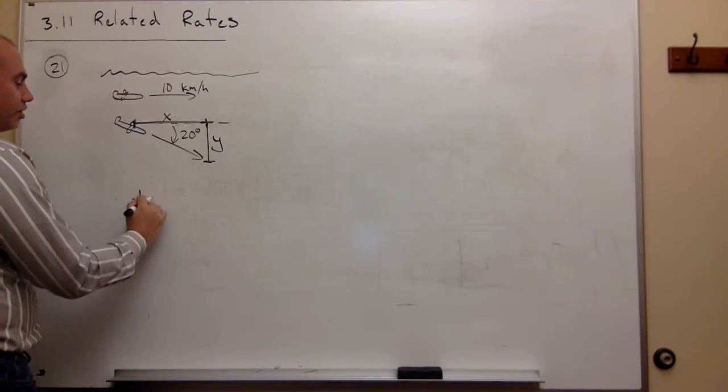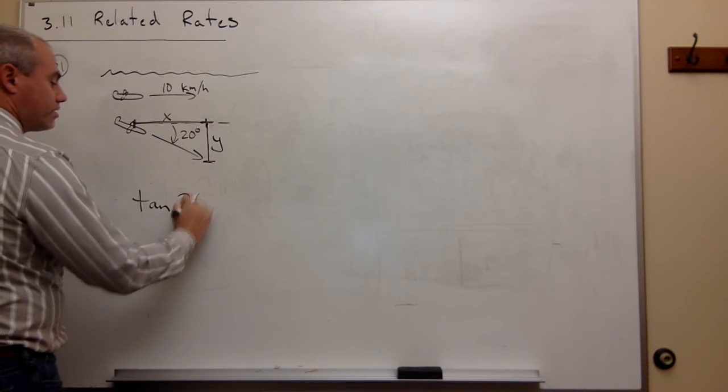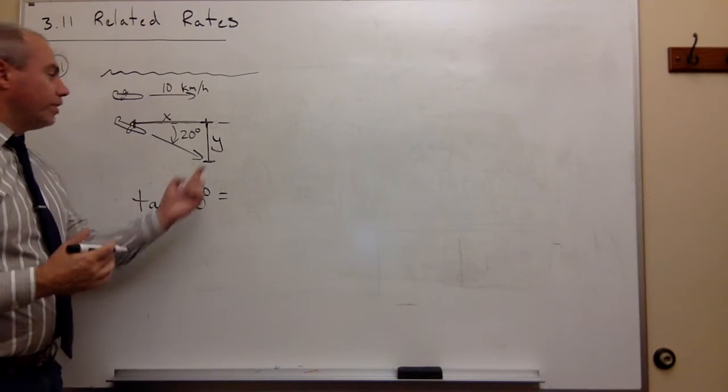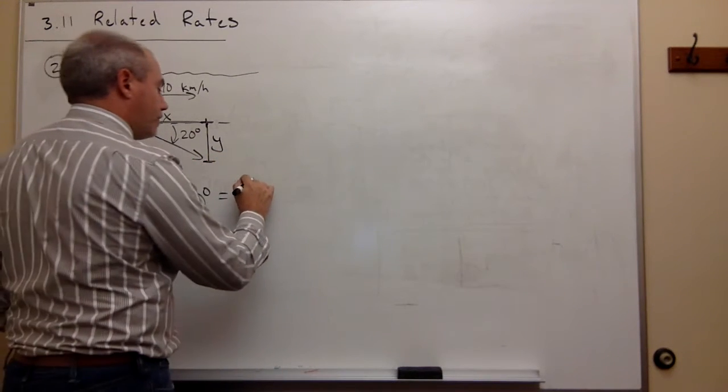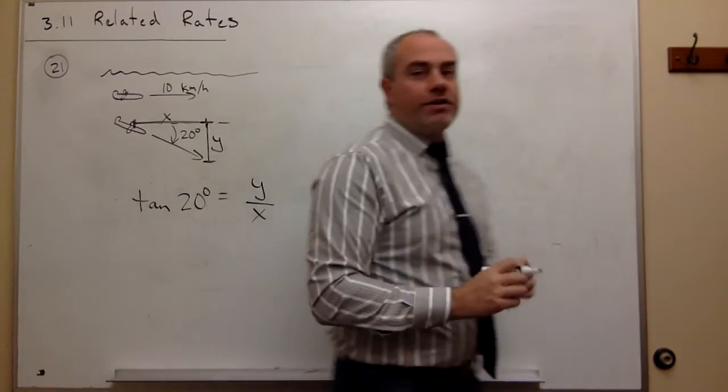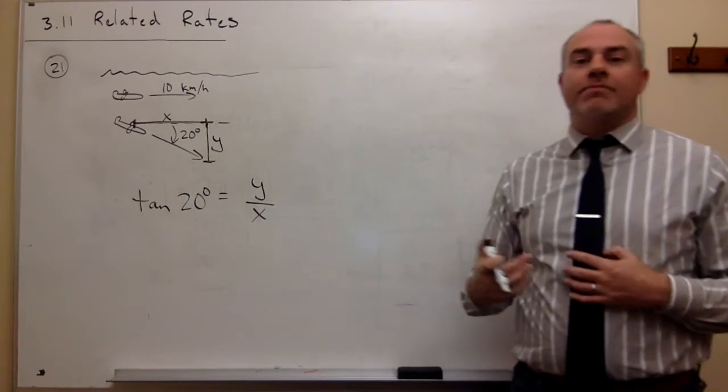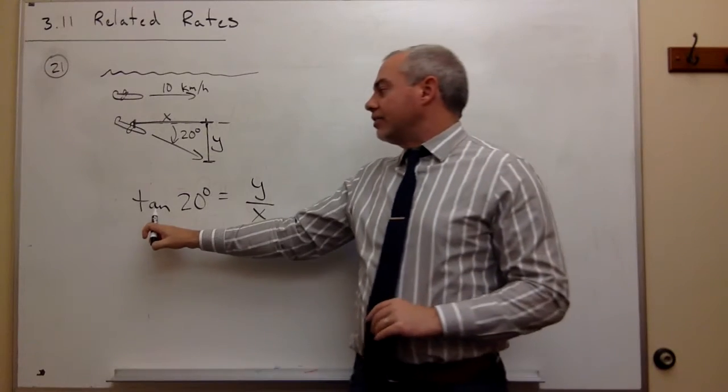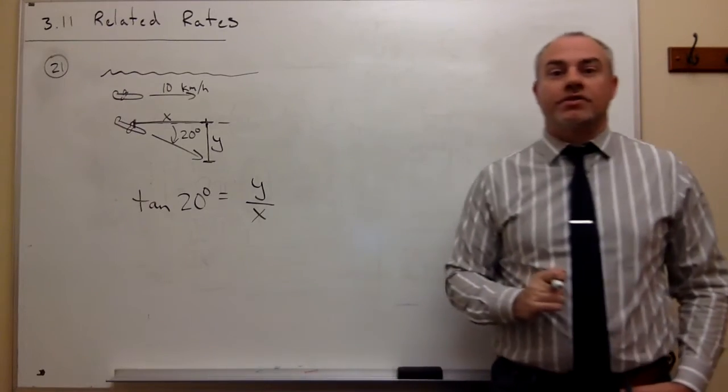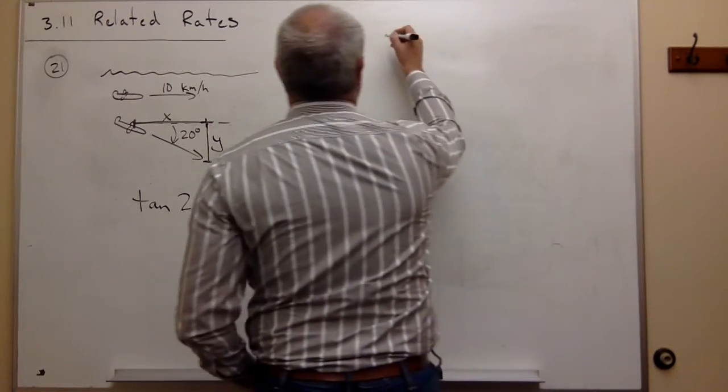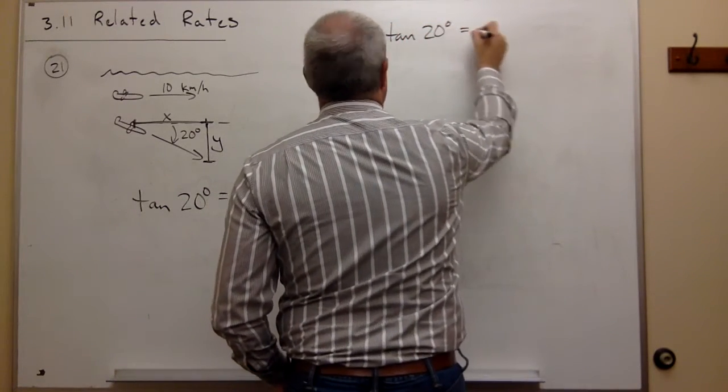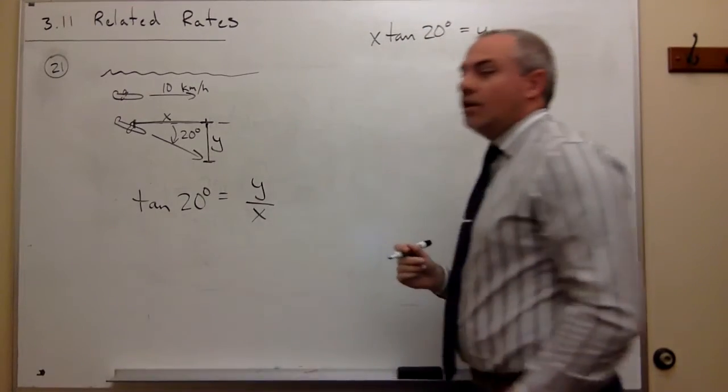The tangent of 20 degrees is equal to the opposite side over the adjacent side. In this case, the opposite side is y and the adjacent side is x, so tangent of 20 degrees is y over x. Now I could multiply both sides of this equation by x to rewrite this equation as x times tangent of 20 degrees equals y. Now I'm ready to take the derivative.